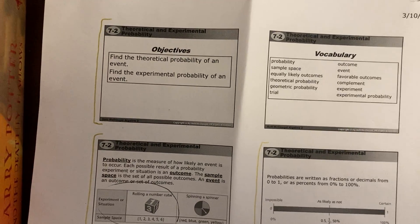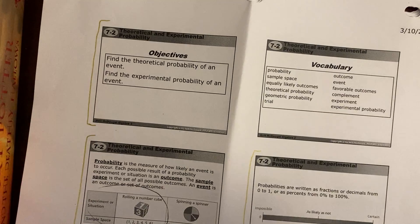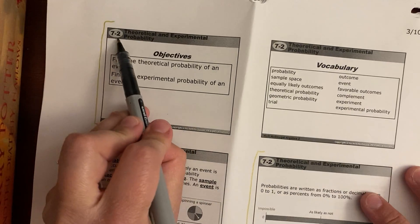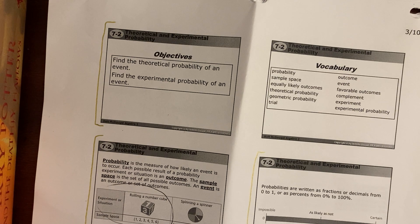Hello, Algebra 2 students. Today we are doing what it says here: 7.2, but this corresponds to 11.2 on your Math Excel. Theoretical and Experimental Probabilities.